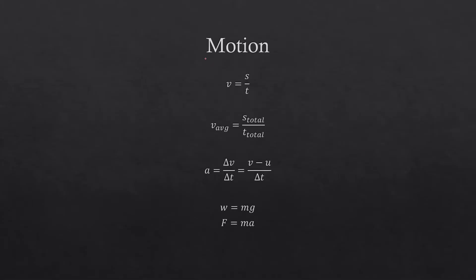First we have motion — equations of motion. Velocity is nothing but displacement by time. One thing to note is that displacement is a vector quantity and speed is a scalar quantity. Speed is equal to distance by time, while velocity is equal to displacement by time. So velocity is a vector quantity while speed is a scalar quantity.